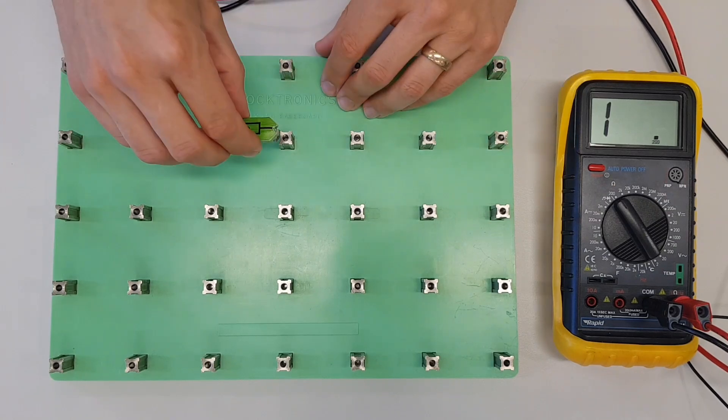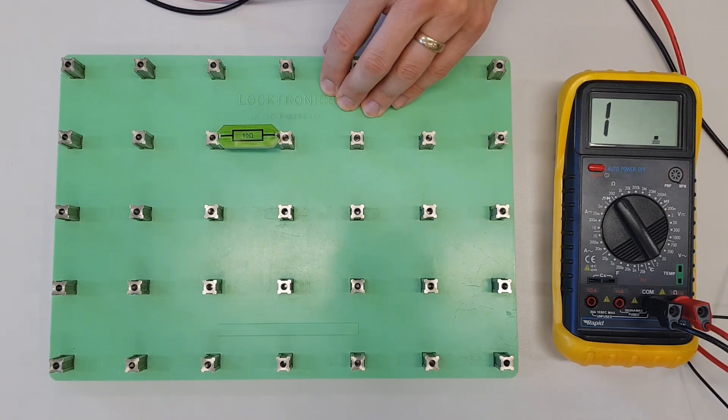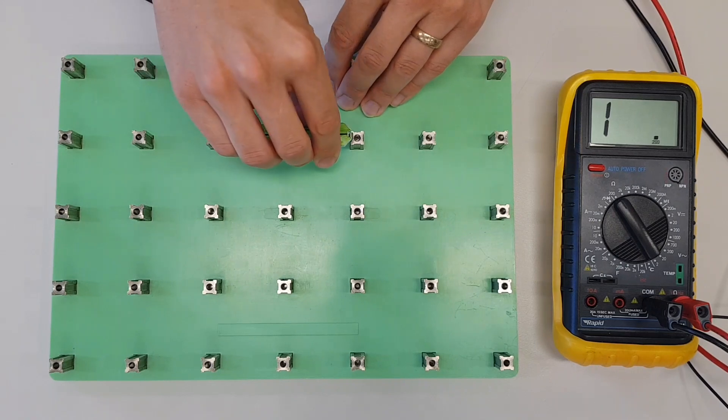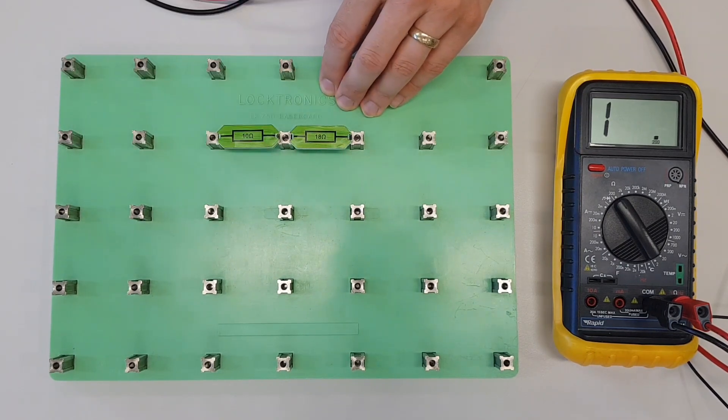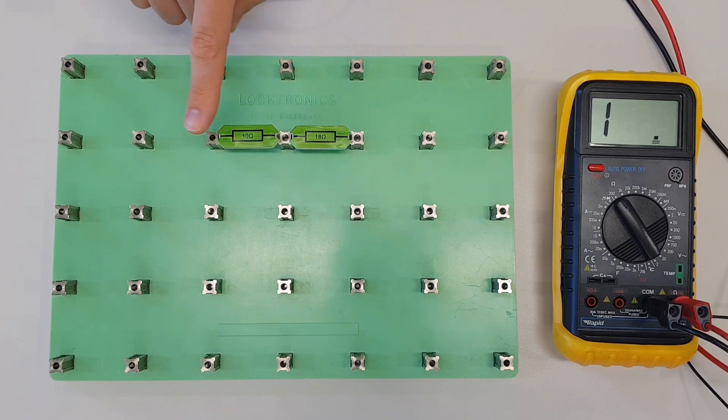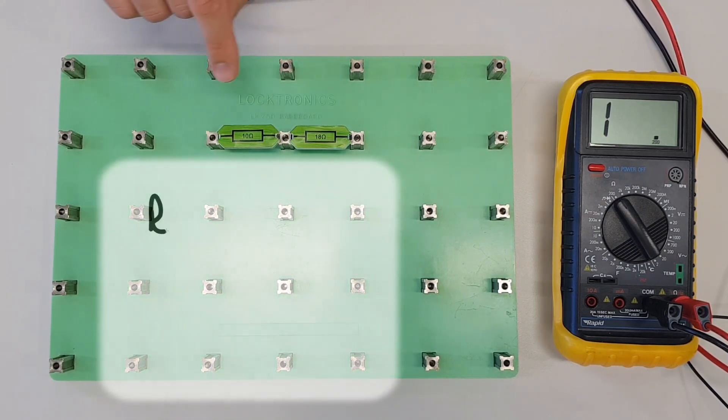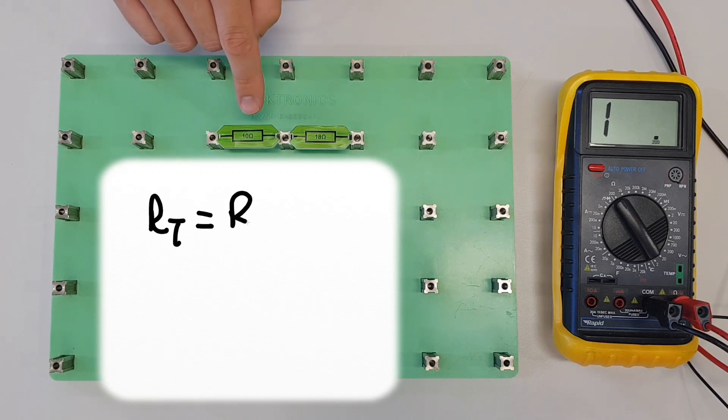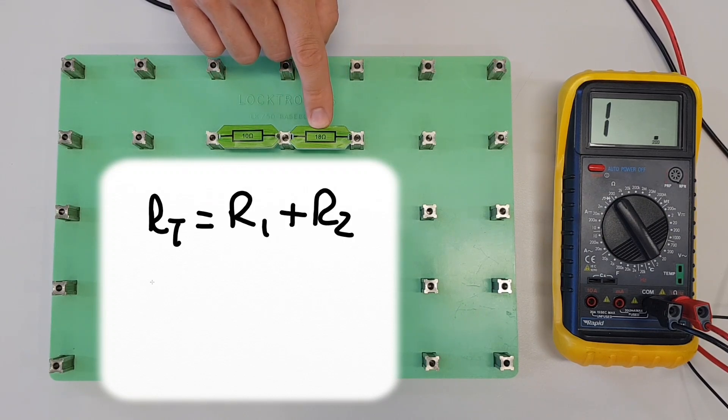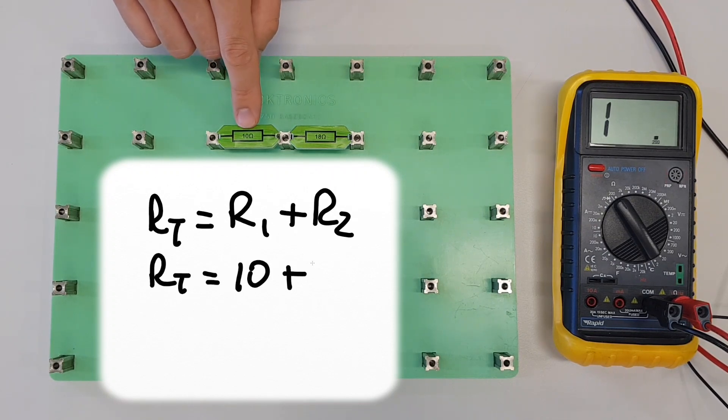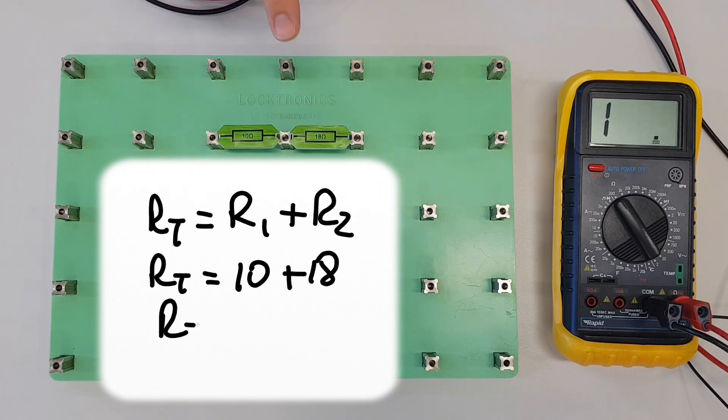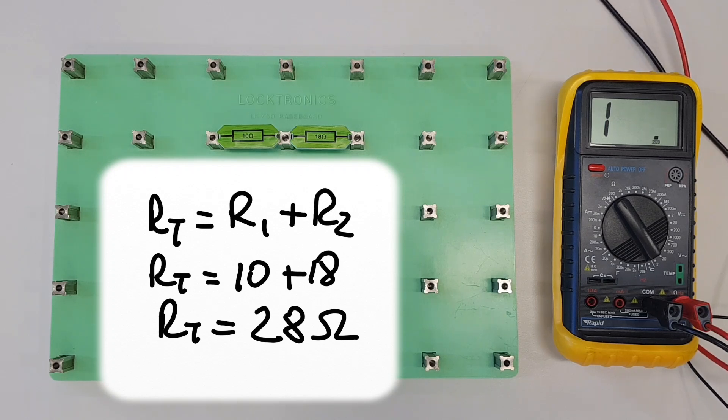First of all, we're going to connect a 10 ohm resistor to an 18 ohm resistor. From a previous video, we know that the formula for calculating resistances is RT equals R1 plus R2, where RT is the total resistance of the circuit. So what we should expect to get here is RT equals 10 plus 18, and that's going to give us 28 ohms.